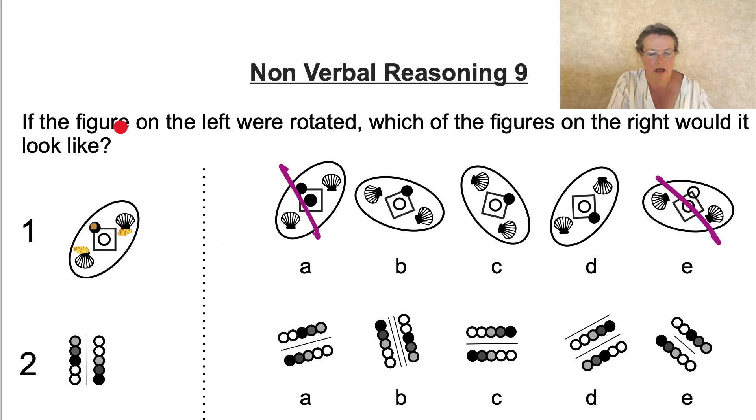Right. So we want the closey bit of the shell to be pointing to each other. It does on B. Doesn't on C. And on D, they're furthest apart. No. So the answer's B. We didn't need to think about how it's rotated. We just need to think about it.